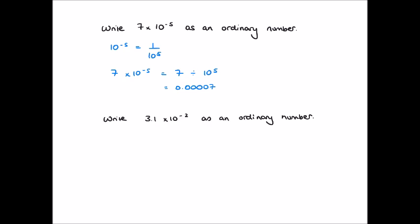Let's repeat this with 3.1 times 10 to the power of negative 2. 10 to the power of negative 2 is the same as 1 divided by 10 squared. So 3.1 times 10 to the power of negative 2 is the same as 3.1 divided by 10 squared. We divide by 10 twice, so the digits move to the right two spaces, giving us 0.031. So 3.1 times 10 to the power of negative 2 is 0.031.